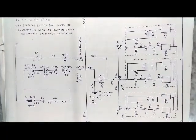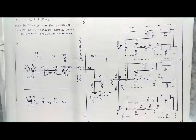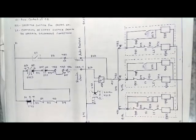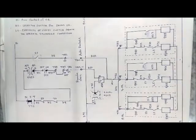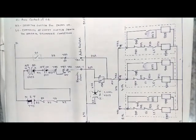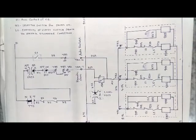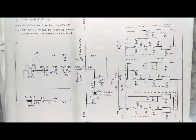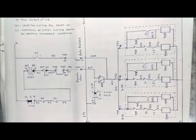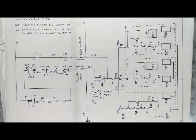Today I will discuss the operation of a 220kV circuit breaker along with its wiring diagram. In this diagram, the closing operation is shown. The right-hand side portion shows the circuit breaker portion and the left-hand side portion shows the control and relay panel portion. In between there are cables.